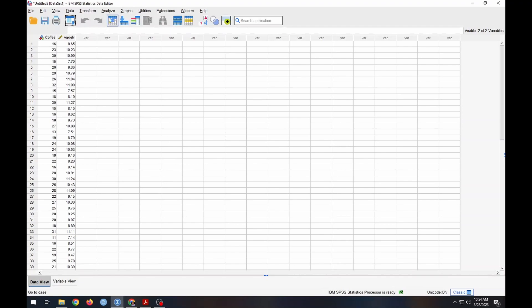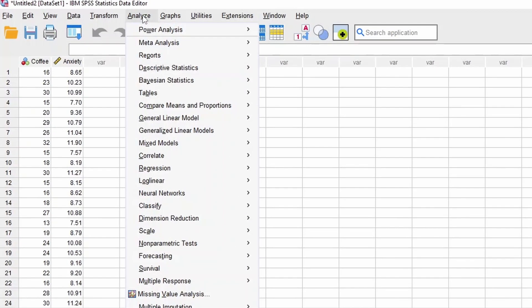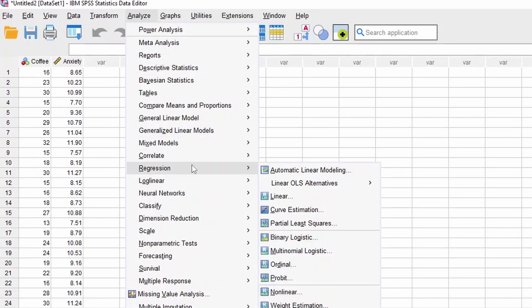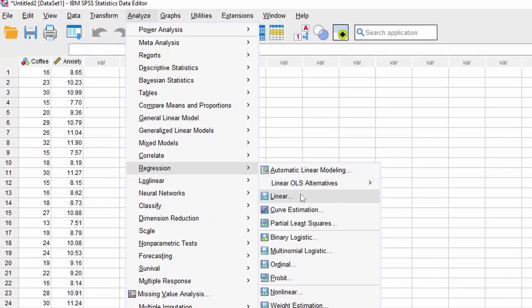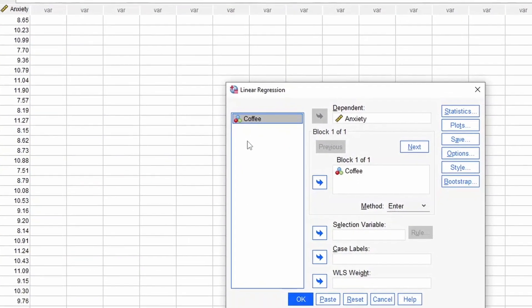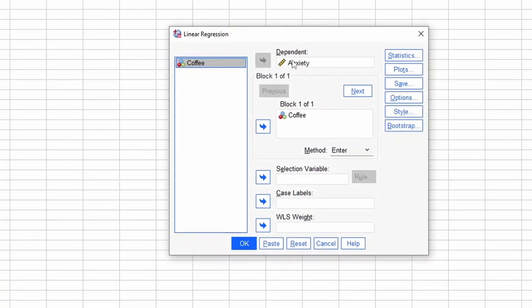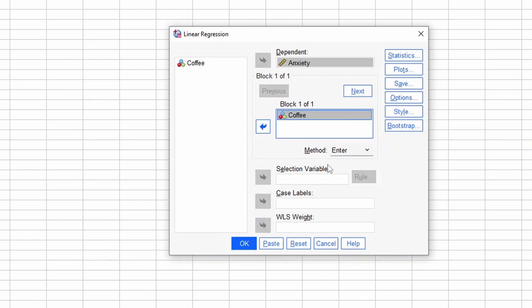This is going to be the same analysis that we've done in the last couple videos, just for repetition. So you see how it works. So what we're going to do is we're going to go up to analyze. We're going to come down to regression. Once we see regression, we're going to go to linear. Hit linear. I've already put in here anxiety and coffee. So our dependent variable is anxiety. Our independent variable is coffee. And I'm not going to do anything else, but add these two and hit okay.